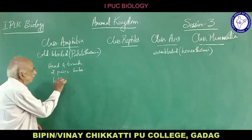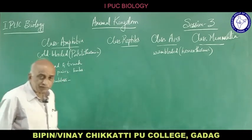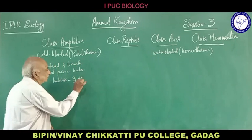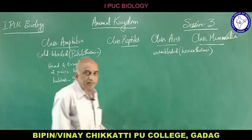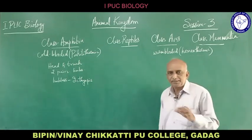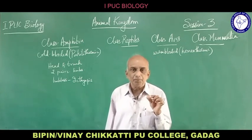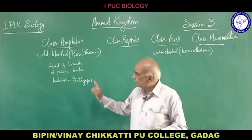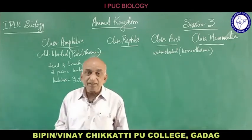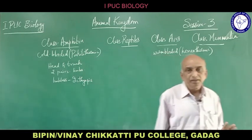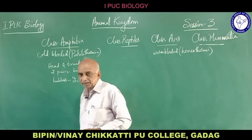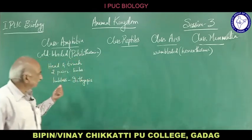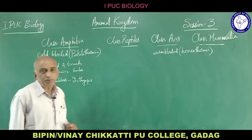Ichthyophis is one example of a limbless amphibian. It has a cylindrical body, somewhat like an earthworm but broader and not as long. Ichthyophis commonly lives in sandy soils and can be found in the southern parts of some states. Two pairs of limbs is the important character for most amphibians.